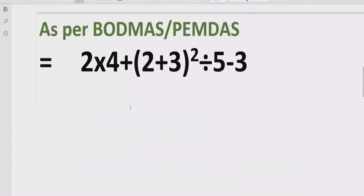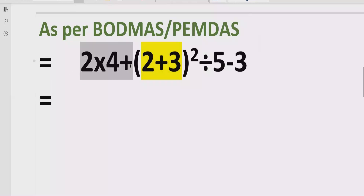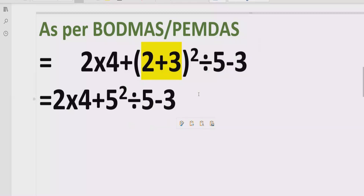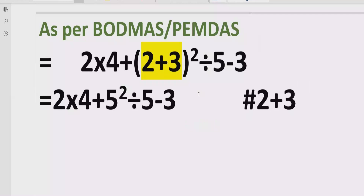Now, moving forward to solve the given expression. According to the BODMAS rule, first of all we have to solve the bracket. Here we have the bracket which is 2 plus 3, so we will solve this one first. We write other parts as they are, and this bracket resolves to 5, giving us 5 raised to the power 2.